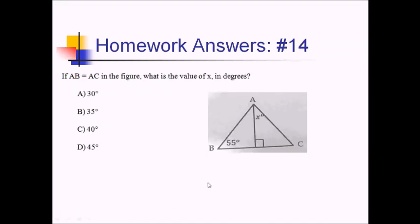For number 14, we're told that AB and AC equal each other. We want the value of this angle in the triangle. The congruent sides mean we have an isosceles triangle, so this 55-degree angle and the angle across from it also have to be the same — angle C is also 55 degrees. There are 180 degrees in a triangle; we've already used 90 with the right angle. So x is the leftover 90 degrees minus the 55 used in angle C: 90 minus 55 gives us 35 degrees. Choice B.